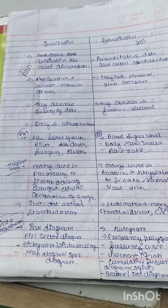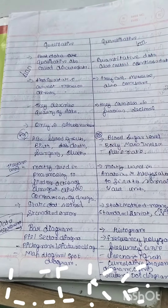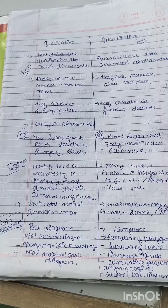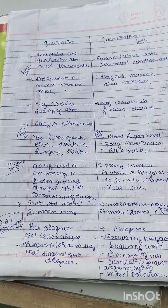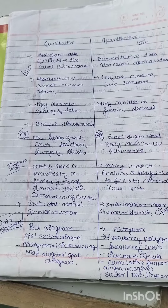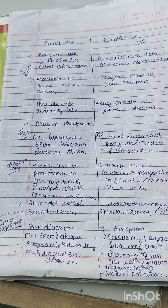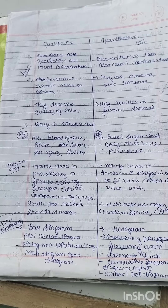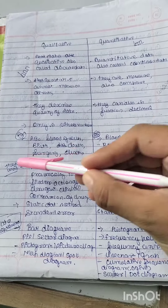For example, qualitative data includes things like blood group, birth rate, death rate, number of surgeries, and obesity. Quantitative data includes things like blood sugar level, blood mass index, and pulse rate — these are all counted as quantitative data.